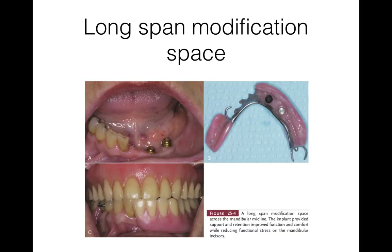The second condition is a long-span modification space. Look at this case from the textbook — this is a Kennedy class 2 modification 1. However, this modification space is even longer or larger than the Kennedy class 2 area. Even though the modification means that anterior teeth are present, it's still not enough because it spans almost the entire arch. So we need support to prevent extra force on the remaining teeth. That's why in this case, they placed two implants to provide support and retention.